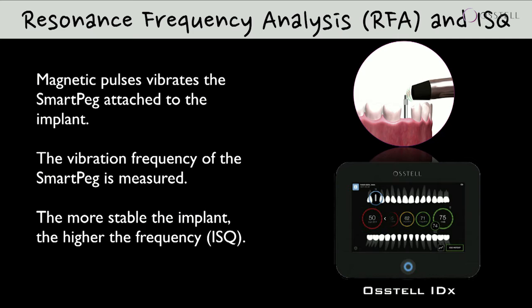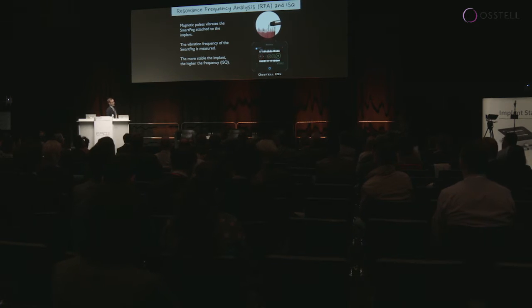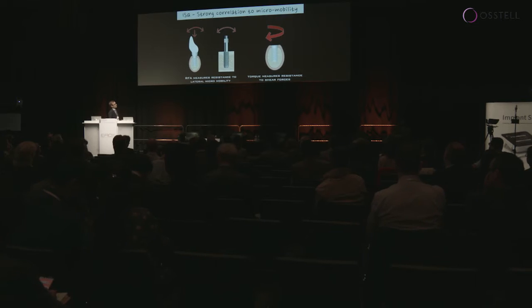How do we actually measure? We attach a smart peg to the implant, and by means of this instrument we send a magnetic pulse, creating a vibration which comes back to the instrument. We measure the frequency and transfer it to an ISQ value. What you see on the right-hand side is the newest generation of the OSTEL technique — the OSTEL IDX. The more stable the implant, the higher the ISQ value.